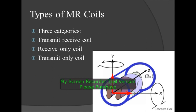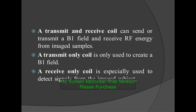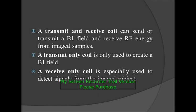Types of MR coils. There are three types of MR coils: transmit-receive coil, receive-only coil, and transmit-only coil. A transmit-and-receive coil can both send and receive a B1 field and receive RF energy from image samples. A transmit-only coil is used only to create a B1 field. A receive-only coil is especially used to detect signals from the image subject.